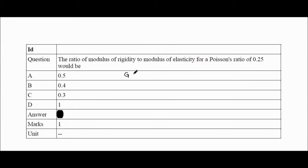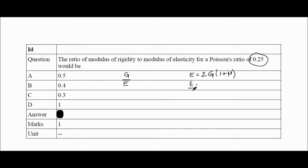Next question: The ratio of modulus of rigidity G to modulus of elasticity E — that is G upon E — for a Poisson's ratio of 0.25 would be. We use the relation E = 2G(1 + μ). So E/G = 2(1 + μ). Substituting μ = 0.25 gives E/G = 2 × 1.25.